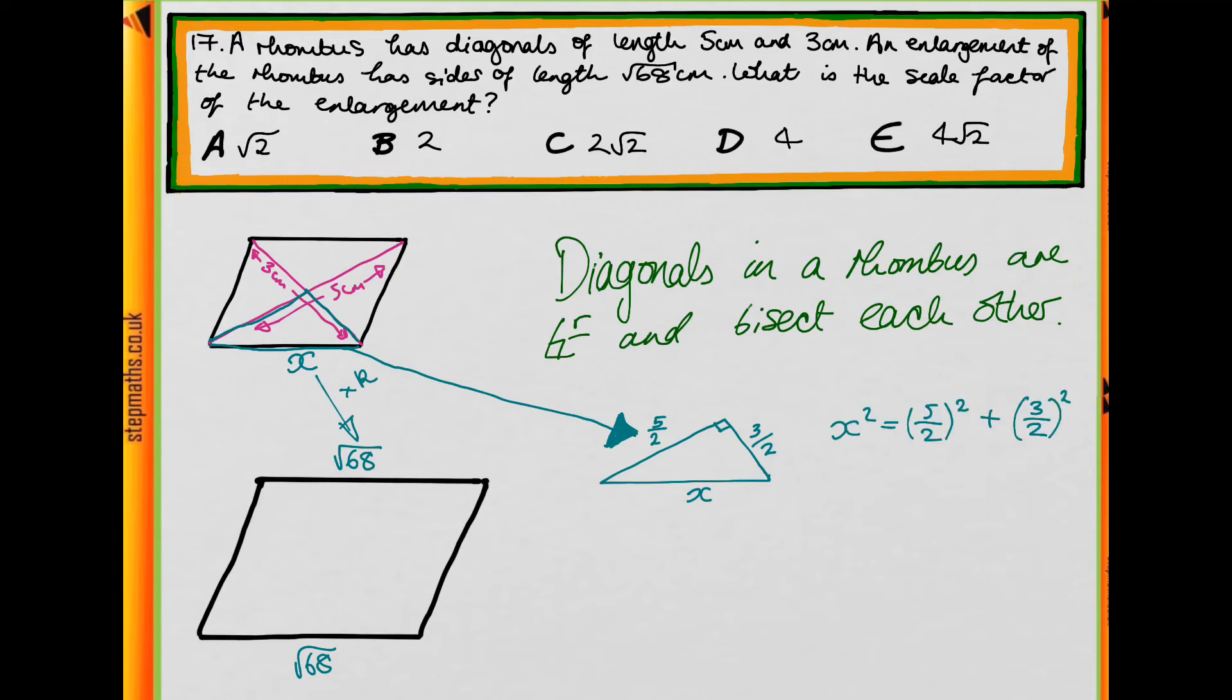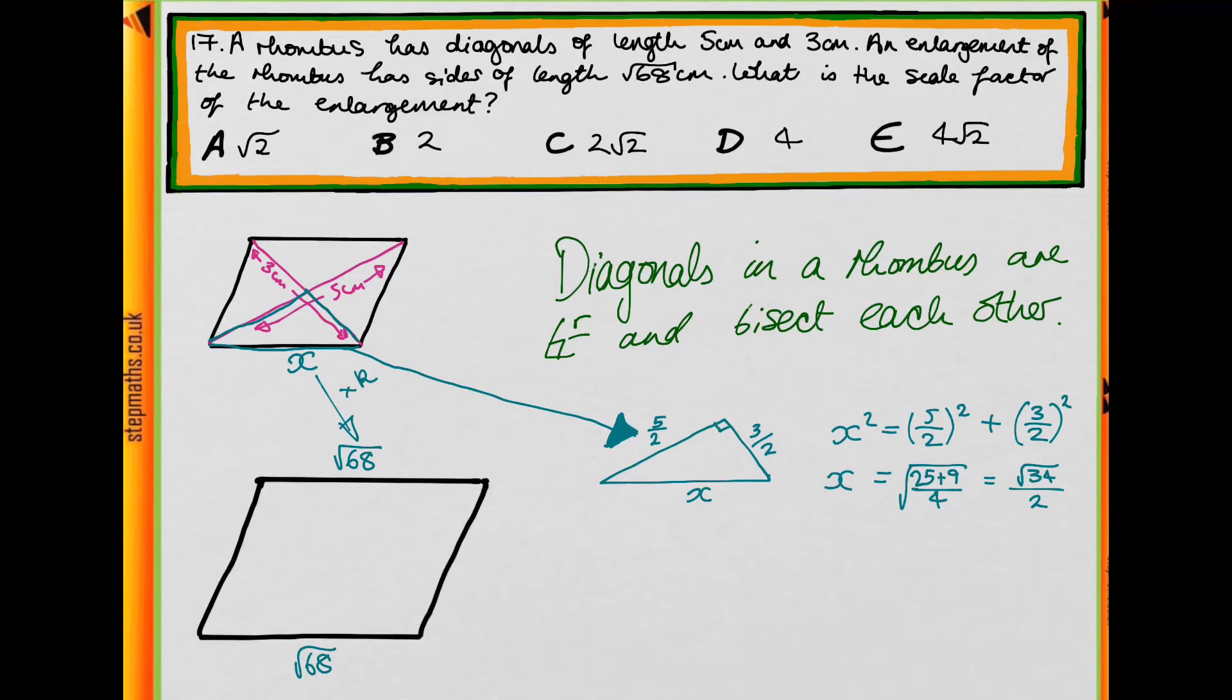Okay, so we know that X squared is equal to 3 over 2 squared plus 5 over 2 squared. This is just Pythagoras' theorem. So from this, we can find X. So X is the square root of 25 plus 9 all over 4. And this simplifies down to √34 over 2.